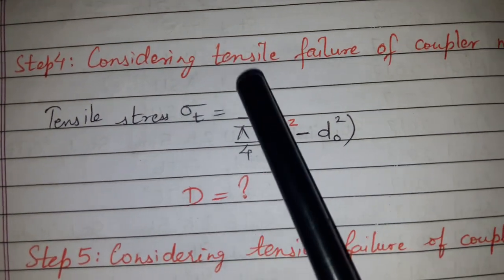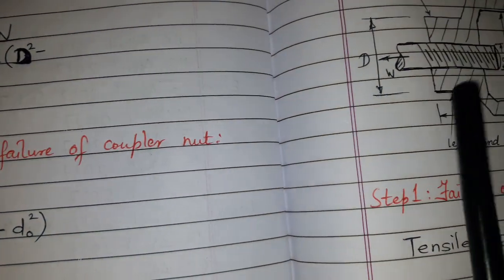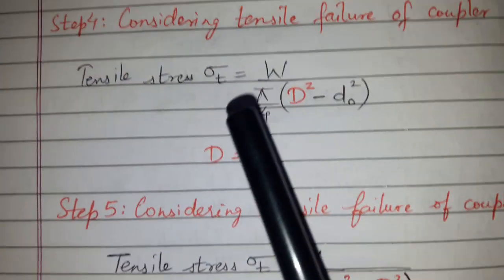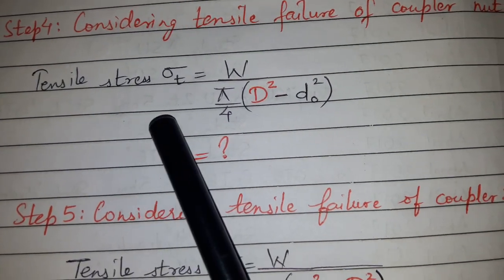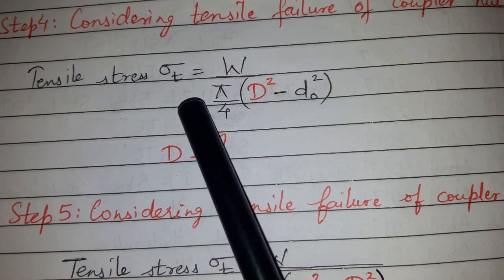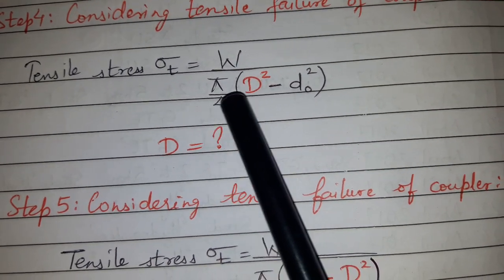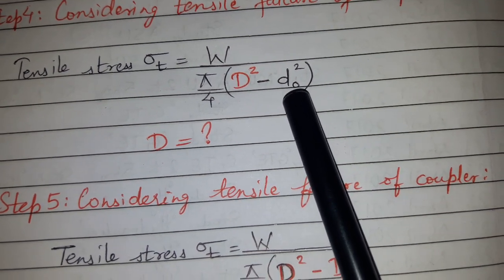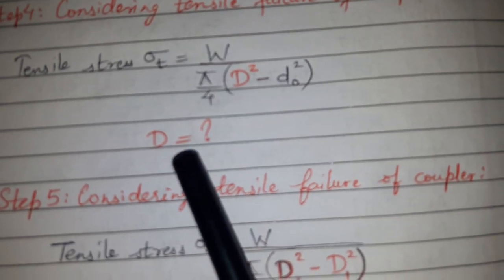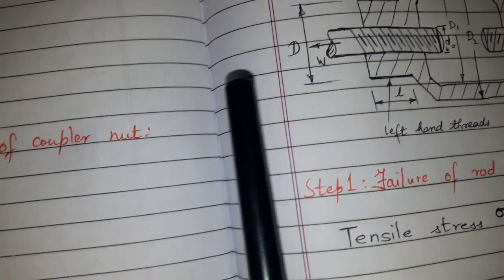Step number 4: considering tensile failure of the coupler nut. We will have this coupler nut. We have considered tensile failure of coupler nut. Tensile stress equals W upon the affected area, that is (π/4)(D² - D0²). From here we can find capital D.